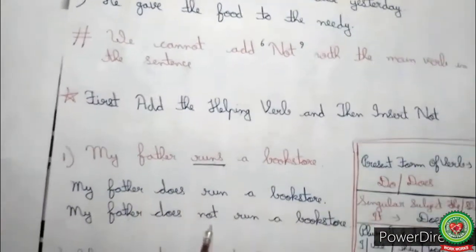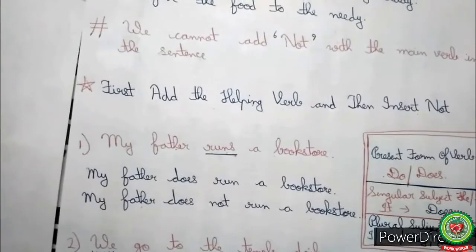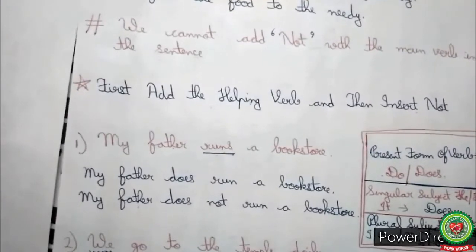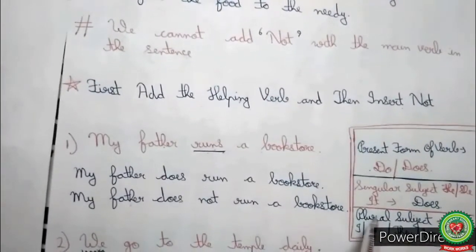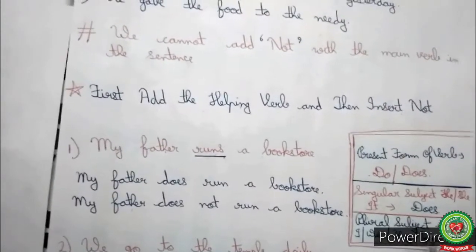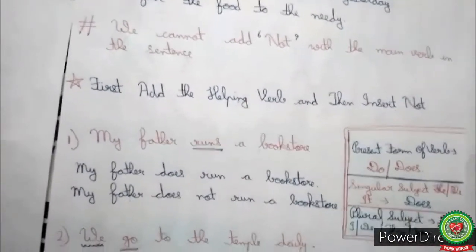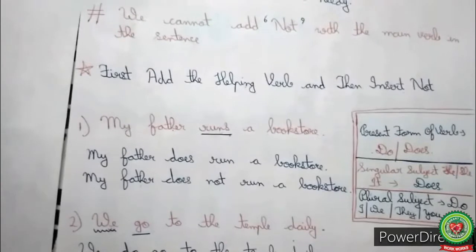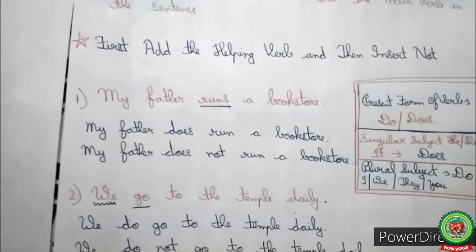Look at the second example: 'We go to the temple daily.' 'Go' is the present form of the verb. But 'we' is a plural subject. Always remember: whenever plural subjects like I, we, they, you are given, we always add 'do' as a helping verb. After adding 'do,' the sentence becomes: 'We do go to the temple daily.' Now adding 'not' gives us: 'We do not go to the temple daily.'